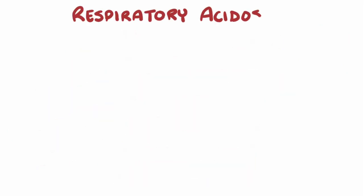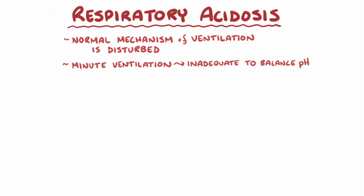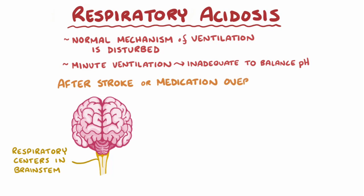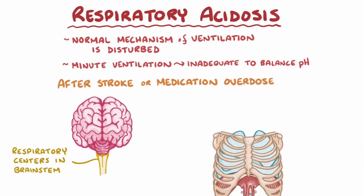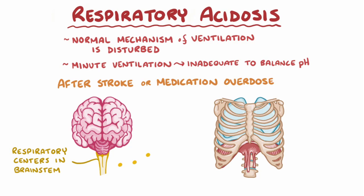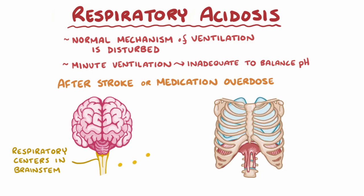In respiratory acidosis, the normal mechanism of ventilation is disturbed, and minute ventilation becomes inadequate to balance the pH. This can be due to a number of problems. Sometimes the problem is not in the lungs themselves but in the respiratory centers of the brainstem. After a stroke or a medication overdose — like with opioids or barbiturates — the respiratory centers can slow their rate of firing, so breathing becomes extremely slow or stops entirely.